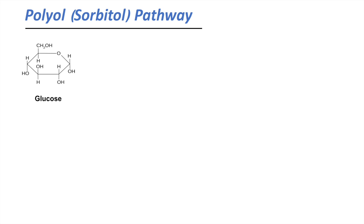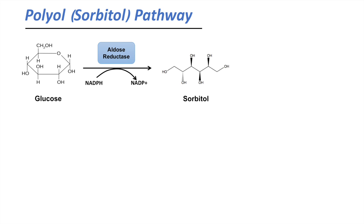So what does the polyol pathway actually do? It takes glucose and converts it to sorbitol within the cell by utilizing the enzyme aldose reductase. In order to convert glucose to sorbitol, aldose reductase requires NADPH and oxidizes NADPH to NADP+. This means that we need an active pentose phosphate pathway, which is where the majority of NADPH is formed.